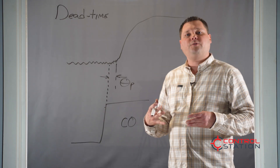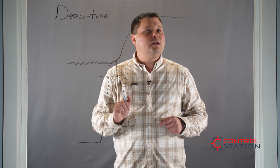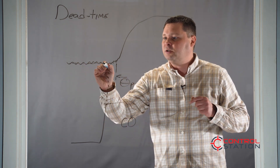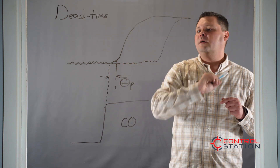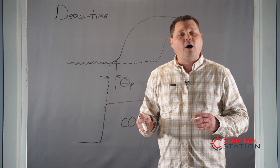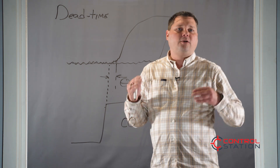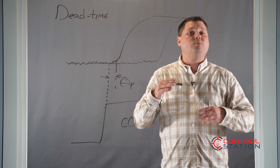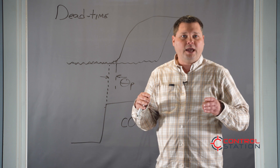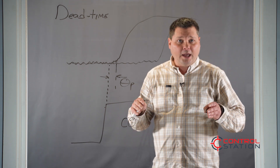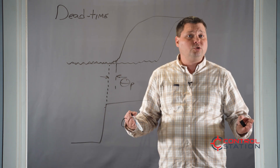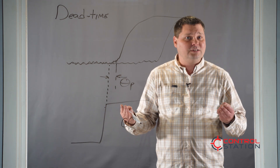Dead time is the killer of control. The larger this number is, that means there's more delay from the time you make a change till something actually starts to happen. Think about how difficult it would be to control the speed in your car — every time you move the gas pedal, it took five seconds for the speed to monitor any change. So you pushed it down and you wait, then you move. How annoying would that be? Well, your PID controllers have to deal with that all the time with your different systems.